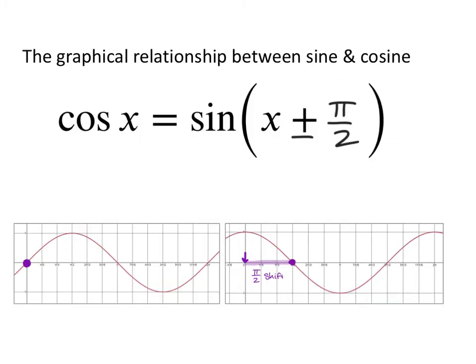Since these graphs are so similar, there is a graphical relationship between sine and cosine — it's a horizontal shift of pi over 2. Cosine hits its zero pi over 2 radians later than sine, so the entire graph is just shifted over pi over 2, and then we have the same graph. They are related.